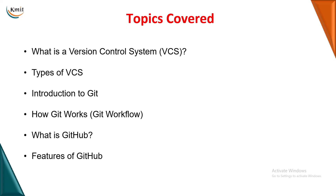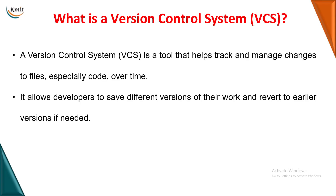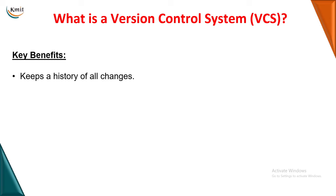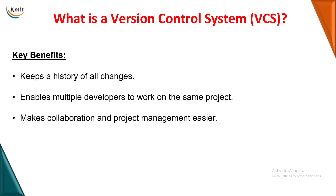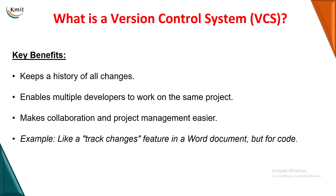Version control system is basically a tool used by developers which helps in tracking the changes that we are making. It saves the code in the form of versions — every time you make a new change it is saved as a new version. The reasons to use it: first, you will have a history of changes; second, developers working on a single project can understand what changes are happening; third, it is easy to identify errors, and if we cannot rectify an error we can revert to a previous version.